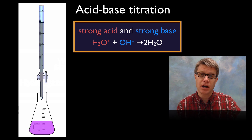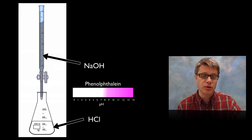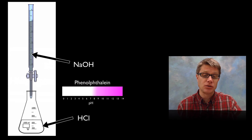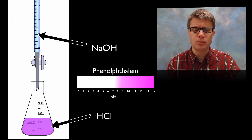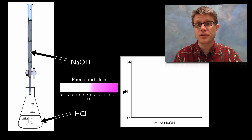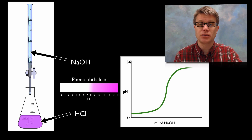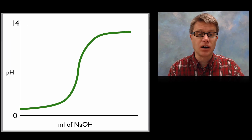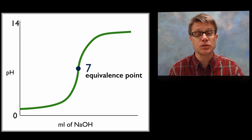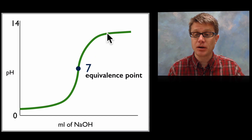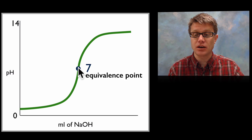We can use acid-base titrations to observe this. For a strong acid and strong base: using a burette, we add sodium hydroxide to hydrochloric acid in an Erlenmeyer flask with phenolphthalein as an indicator. As we add sodium hydroxide it eventually turns pink, indicating pH went above 7. Graphing pH over time, the base is converting the acid into water, and pH doesn't change much at first because lots of strong acid remains. Eventually we reach the equivalence point, and then the pH climbs sharply into the basic range. When adding a strong base to a strong acid, that equivalence point is right at pH 7.